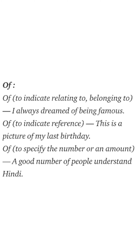Next we have 'of'. Off कैसे show करते हैं? To indicate relating to and belonging to. जैसे: I always dreamt of being famous — किसी चीज़ को show करने के लिए कि मेरा हमेशा ये सपना रहा है कि मैं famous बनूं. To indicate reference: this is a picture of my last birthday.